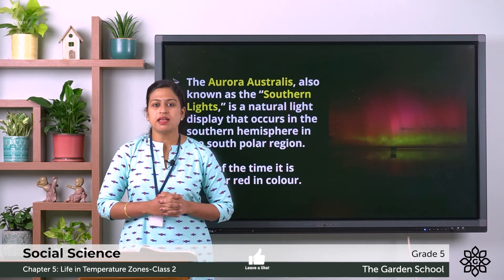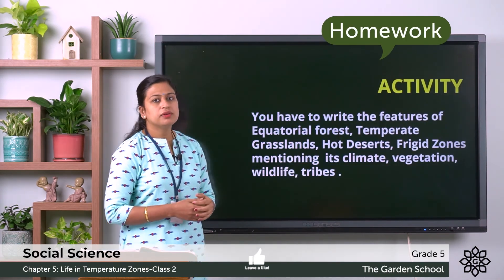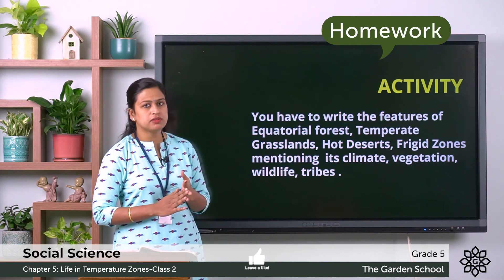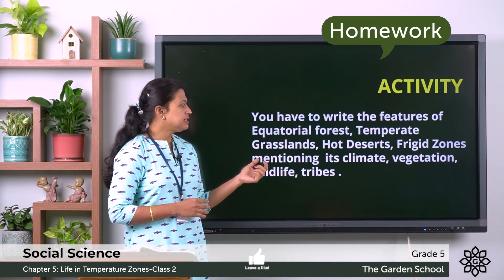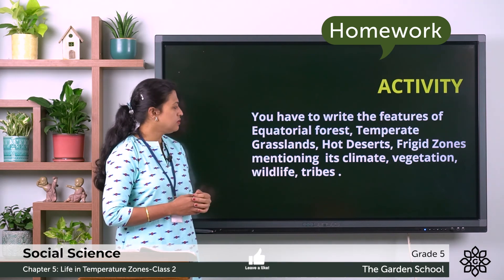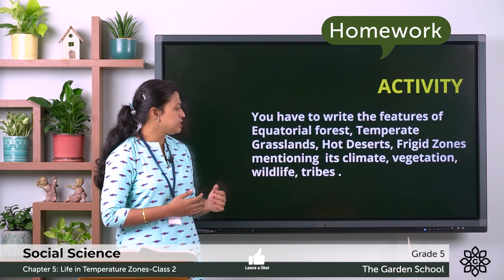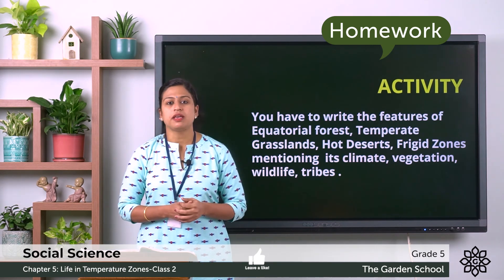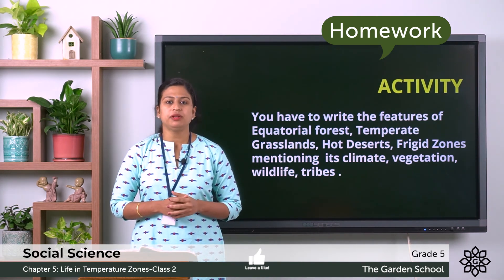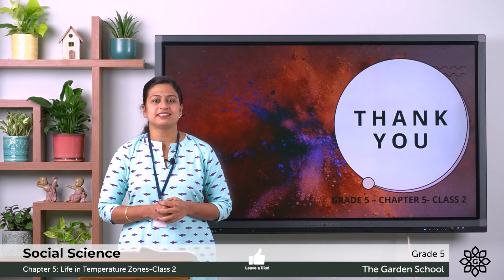This was about the hot deserts and the frigid zones. You have an activity where you have to write the features of equatorial forest, temperate grasslands, hot deserts and frigid zones, mentioning their climate, vegetation, wildlife and tribes. Write it in your notebook and upload it. That's all for today — we will meet in the next class. Thank you.